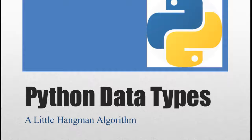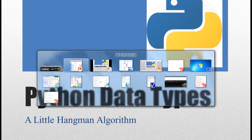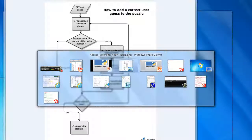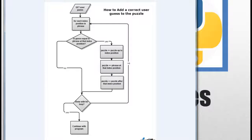It can be a little tricky. We're going to use a variety of things: indexing, slicing, the range function, the length function, and concatenation — all of those to do this. First of all, I decided to put together a flowchart to show you how I'm doing this.